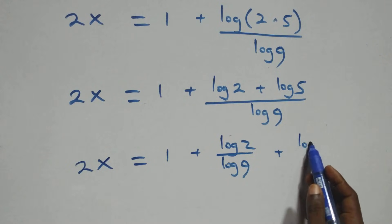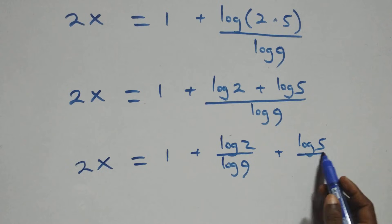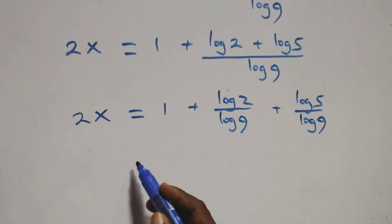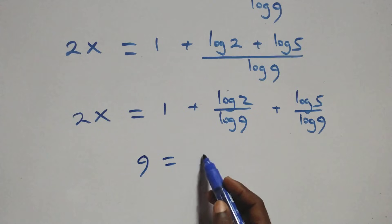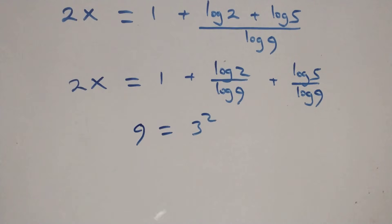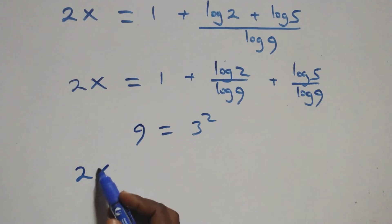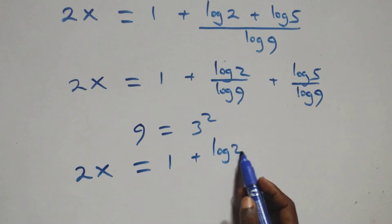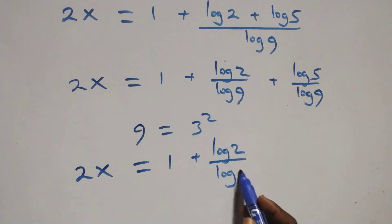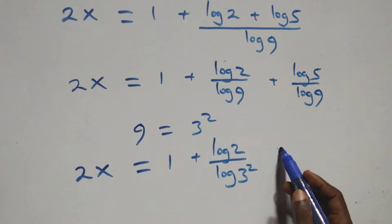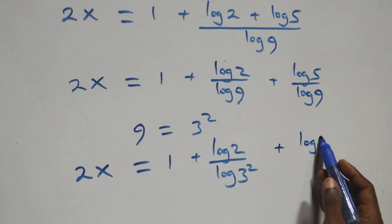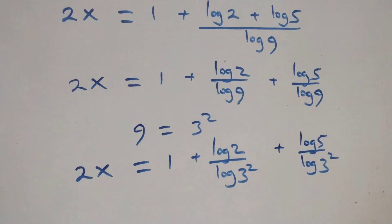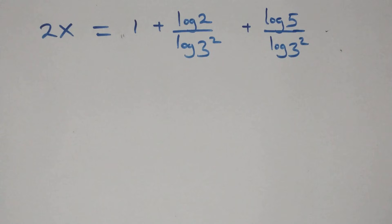Also here we can write 9 as 3 times 3, that is 3 squared. So what we have becomes 2x equals to 1 plus log 2 over log 3 squared, plus log 5 over log 3 squared.